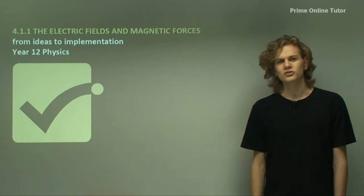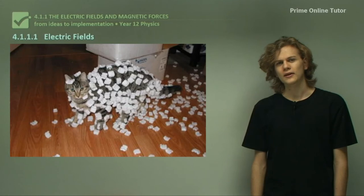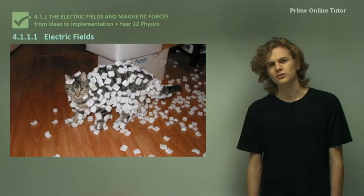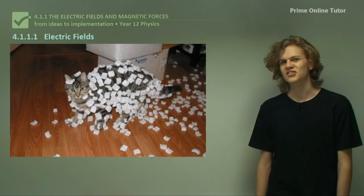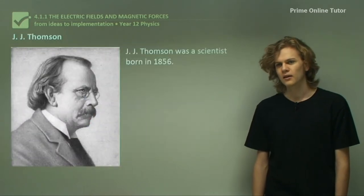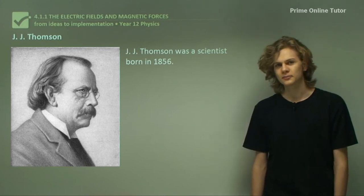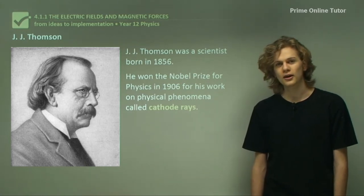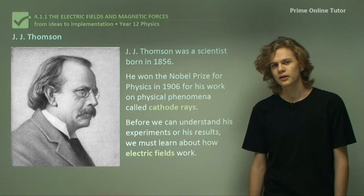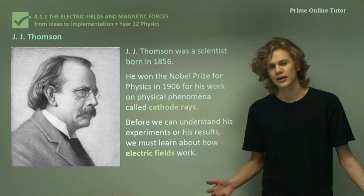The first part of this module, which we'll be studying today, is electric fields. Electric fields concern the effects of charged particles on other charged particles, and electric fields' effects on charged particles. This can be used to describe static electricity, which is causing styrofoam to stick to this cat. An important fellow in this topic is J.J. Thompson, who is a 19th century scientist. In 1906 he won the Nobel Prize for Physics for his work on cathode rays. So cathode rays are important. Before we can understand his experiments or his results, we have to learn something about electric fields and how they work.